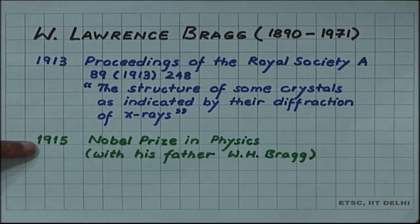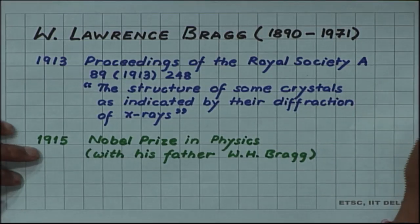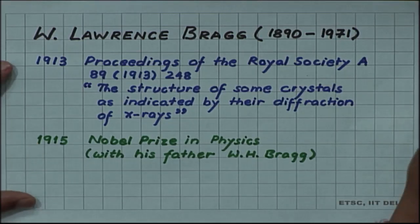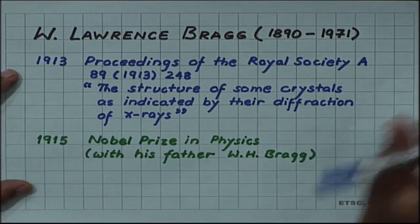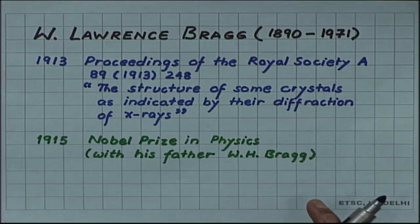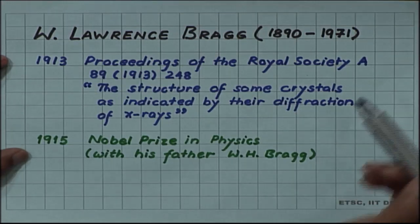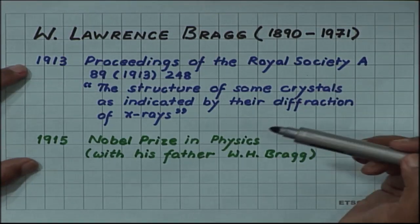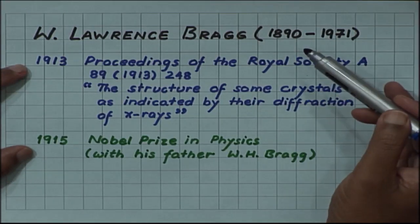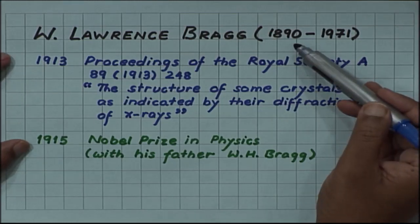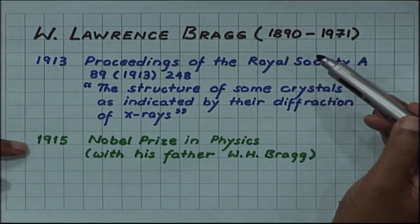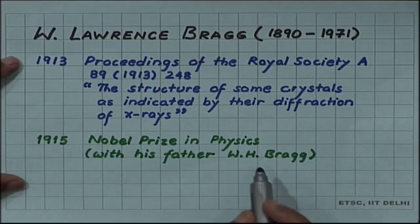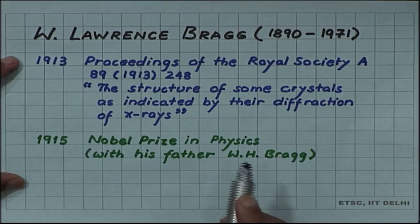He got the Nobel Prize for solving crystal structures using this newly discovered X-ray diffraction tool, and he shared this Nobel Prize with his father William Henry Bragg. He was — and I think still is — the youngest Nobel Prize winner in science. When he got the Nobel Prize he was only 25 years old, and this is the only Nobel Prize which has been shared by a father and son.